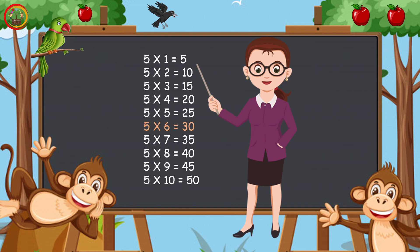5 times 6 is 30. 5 times 7 is 35. 5 times 8 is 40. 5 times 9 is 45. 5 times 10 is 50.